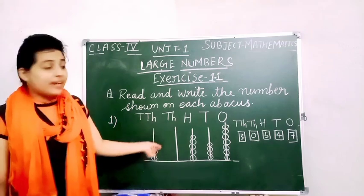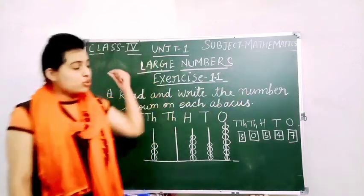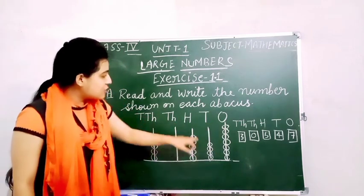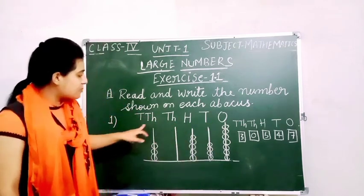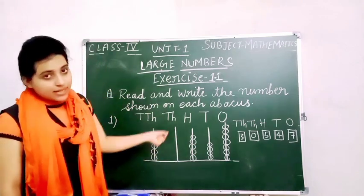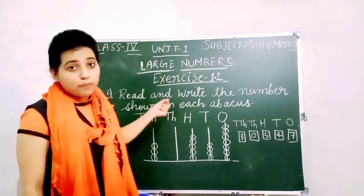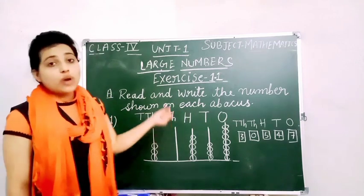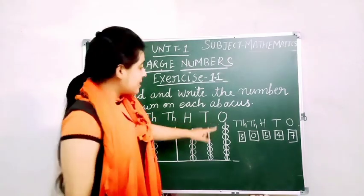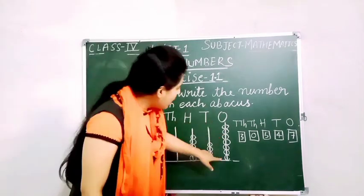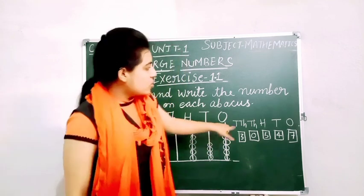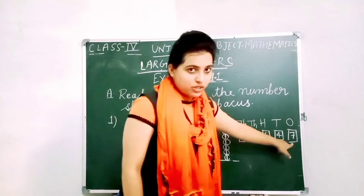Here we need to write the number. We have: 1's place, 10's place, 100's place, 1000's place, and 10,000's place with some beads. According to the places we need to write the number. In the 1's place, how many beads? 1, 2, 3, 4, 5, 6, 7. So 7 is in the 1's place.